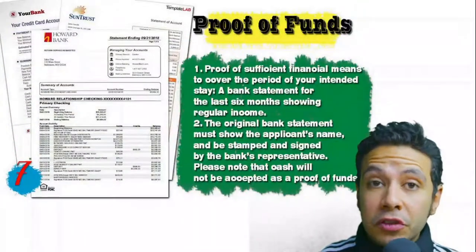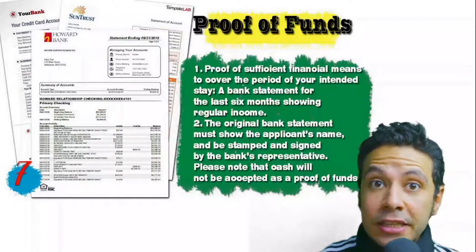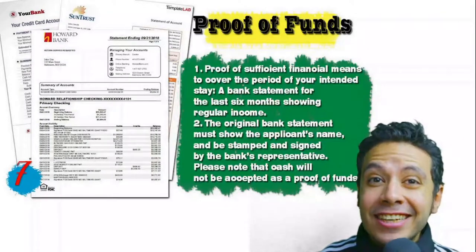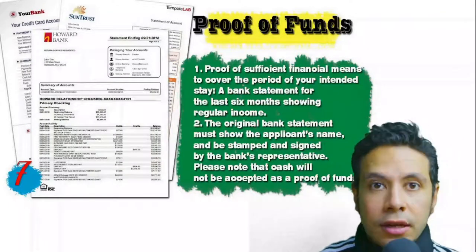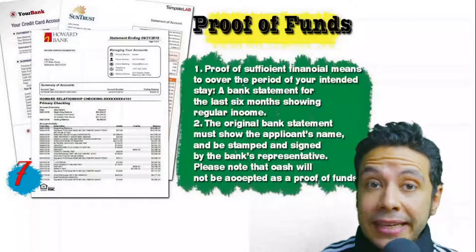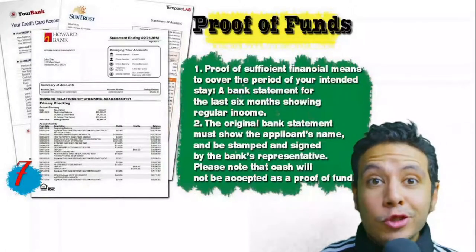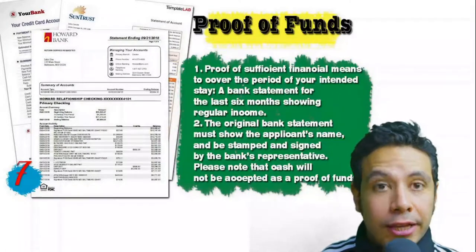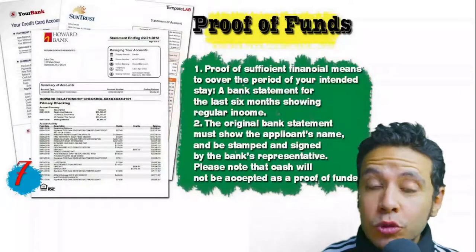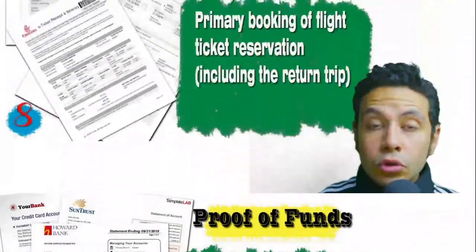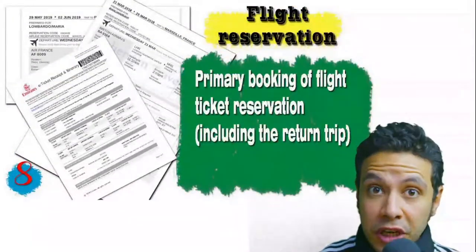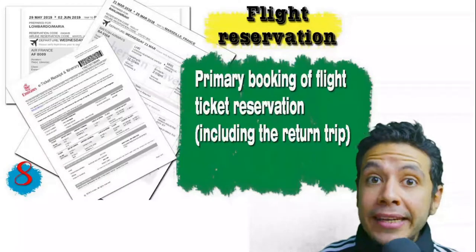You will also need to provide proof of sufficient funds — a bank statement showing your balance for at least six months. The original bank statement must show your name and be signed and stamped by bank representatives. Remember that cash will not be accepted as proof of funds. You should also provide a flight reservation, which can be an initial booking, though in some cases a confirmed booking is required.